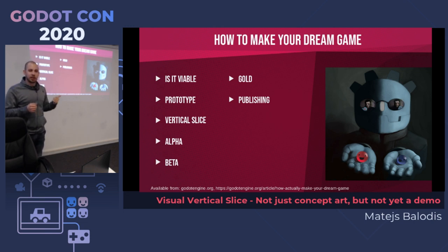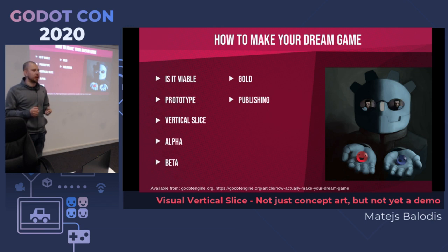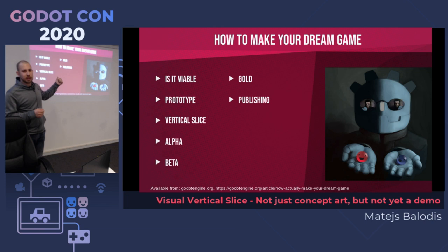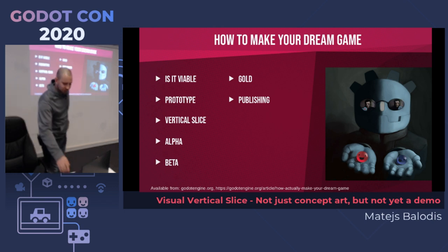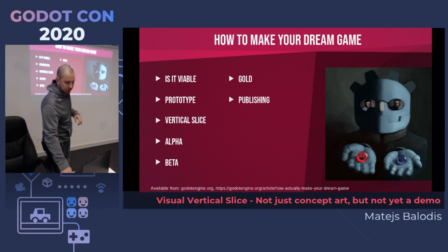Once you have the vertical slice and present it to publishers and investors, you get funding to work on your alpha. Alpha is an almost-ready game but still needs some functionality added. Once done, you move to beta, which is a pretty much ready game that just needs polishing. And then as Juan mentions in his article, there's 'gold,' which means your game is polished and ready to be published. That's the general approach to commercial game development, though in real life it doesn't always work exactly that way.